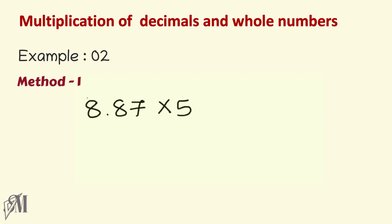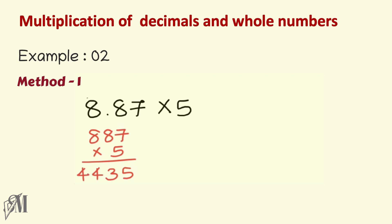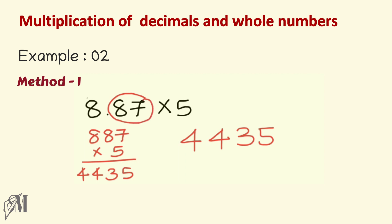Moving on to another example: 8.87 multiplied by 5. In the first method, we neglect the decimal point, so 8.87 becomes 887 multiplied by 5, giving 4435. Going back to the original sum, there are two digits after the decimal point, so the answer must also have two digits after the decimal point, giving 44.35.